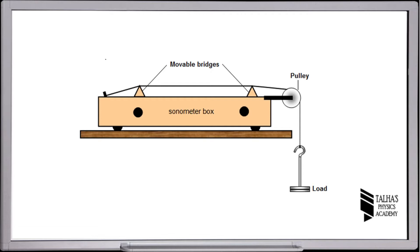A wire which is connected with a fixed point on that sonometer box is passing through a frictionless pulley on which a load is hanging.